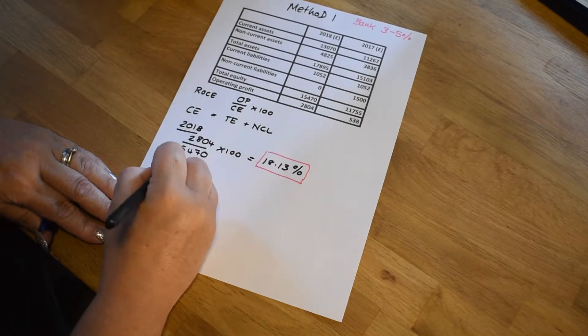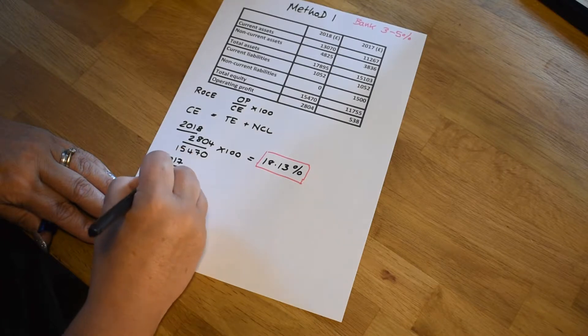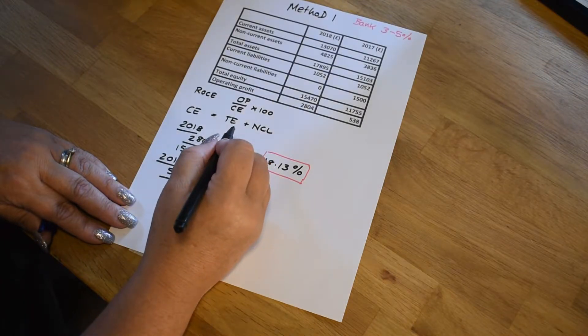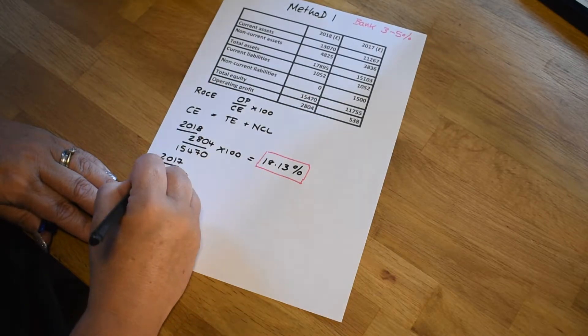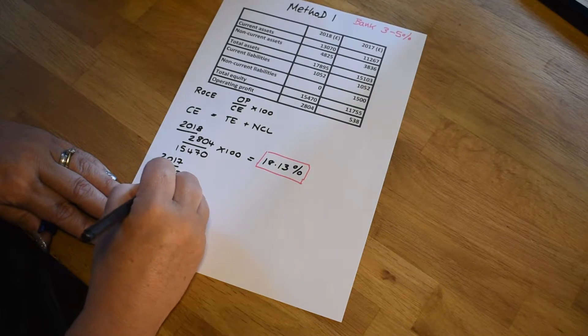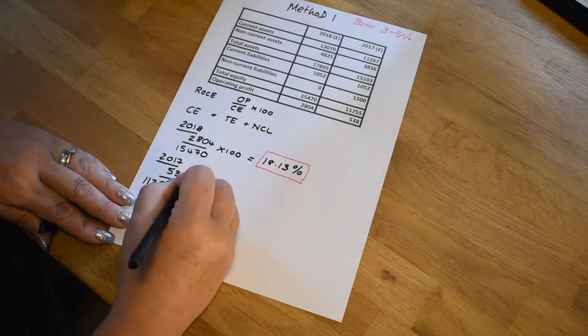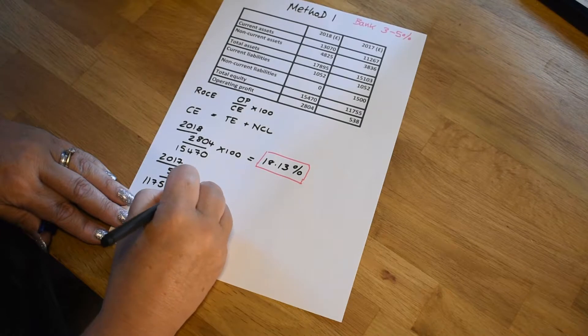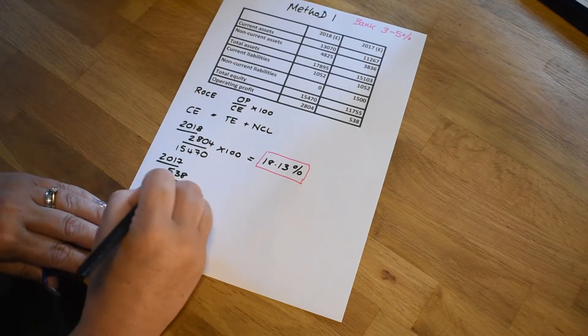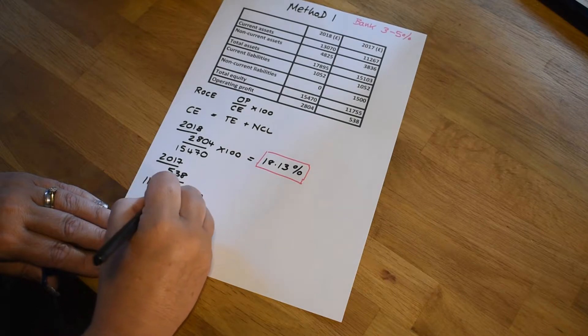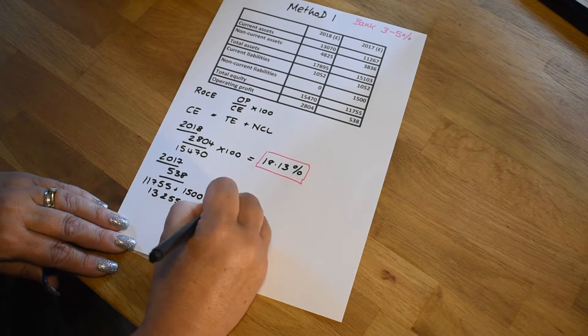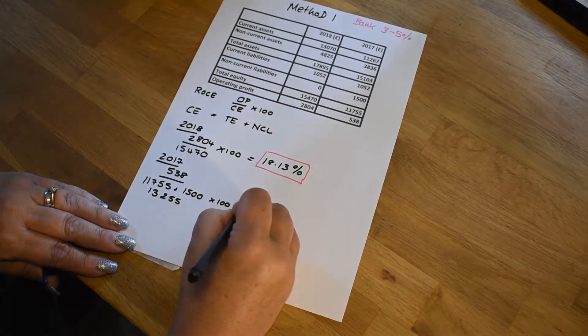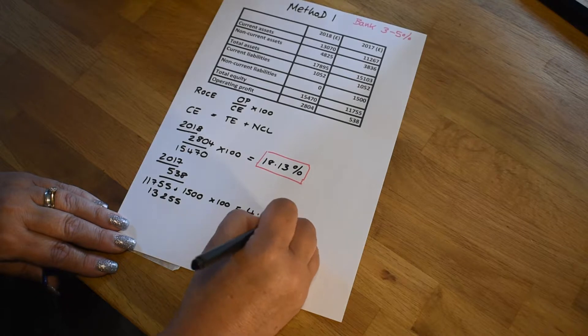So first of all, we take the operating profit for that year, which is 538. And now we need to find our capital employed. And so we're going to use the total equity, which is 11,755 and add it to the non-current liabilities in this case, which is 1,500. That's going to give us 13,255. And if we multiply the whole thing by 100, we're going to get the result of 4.06%.